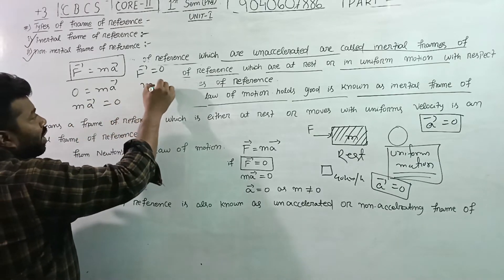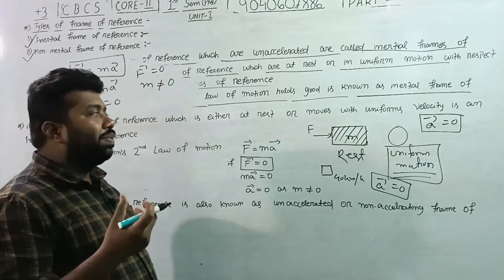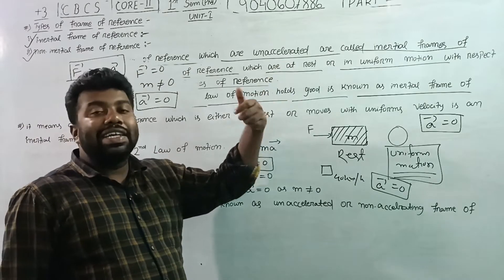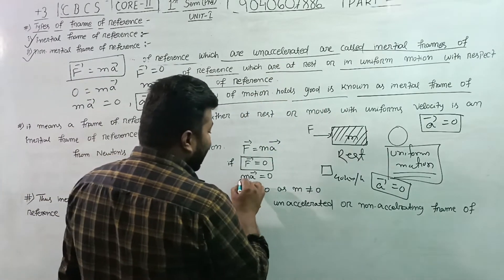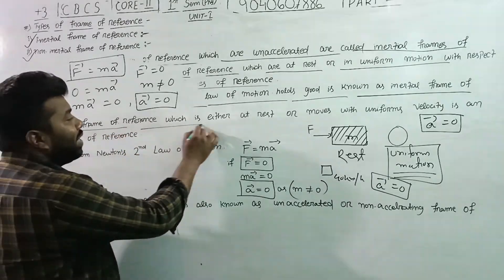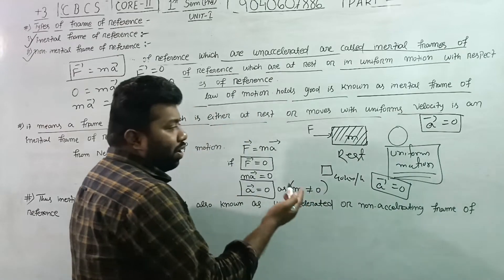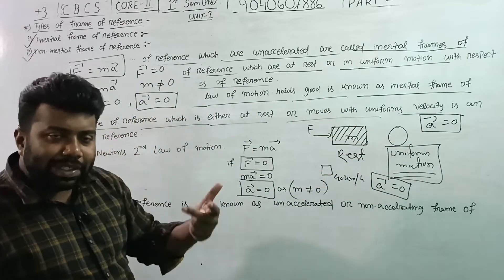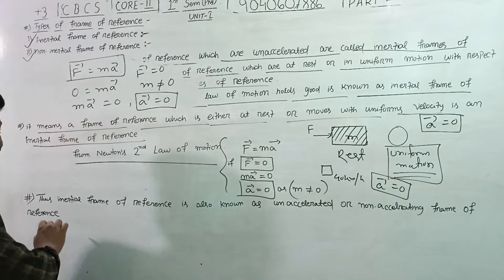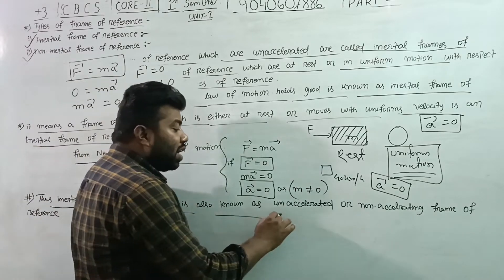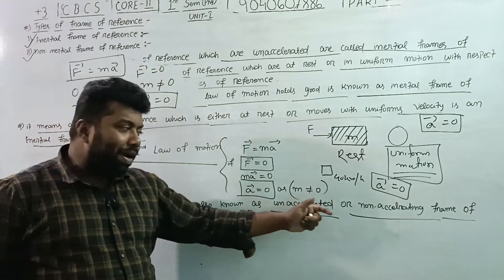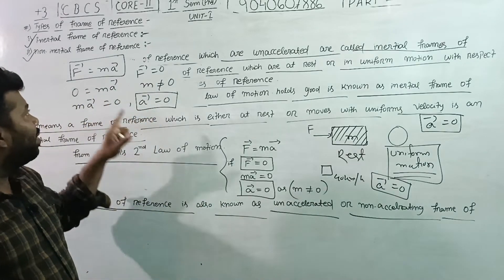Since m is not equal to zero, acceleration vector a must equal zero. So for a frame of reference which is unaccelerated — where acceleration equals zero and m is not equal to zero — this is the inertial frame of reference. According to Newton's second law of motion, the inertial frame of reference is also known as the unaccelerated or non-accelerating frame of reference.